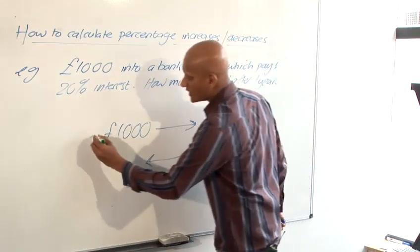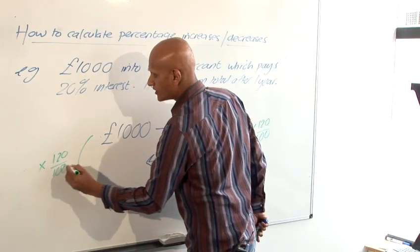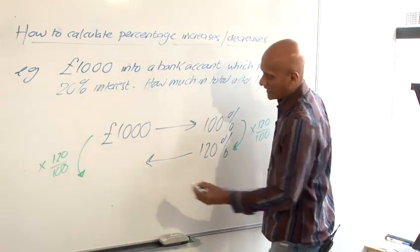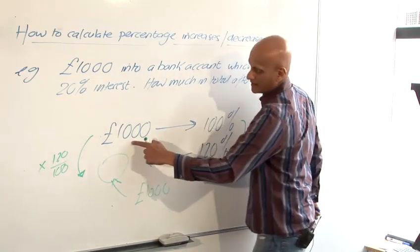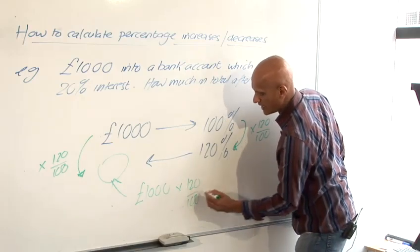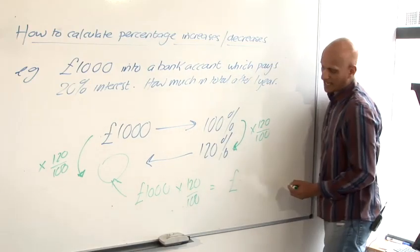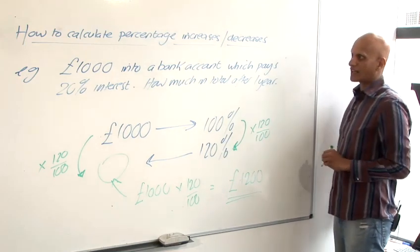And so on the other side we're going to use exactly the same scale factor times 120 over 100 and so our answer here is going to be found by 1,000 pounds times 120 over 100 and so that gives us our answer. Stick it in the calculator, 1,200 pounds. And so there's our final answer.